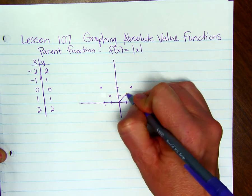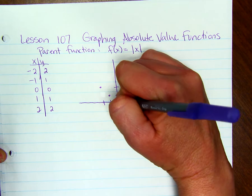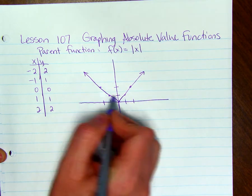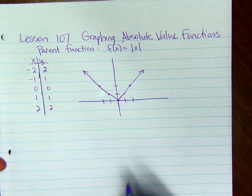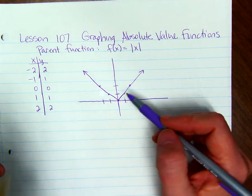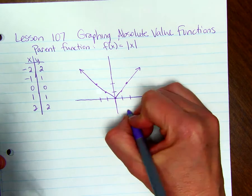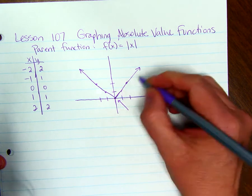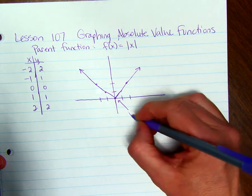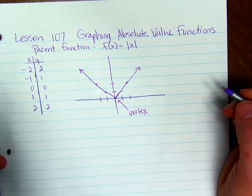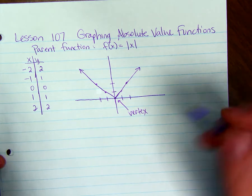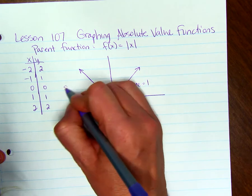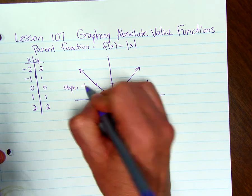So the parent function looks like the letter V, with two arrows going in different directions. The bottom point of the V is called the vertex. The slope of one side is equal to 1 and the slope of the other side is equal to negative 1.